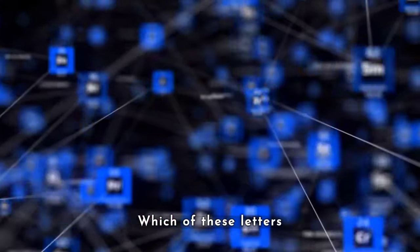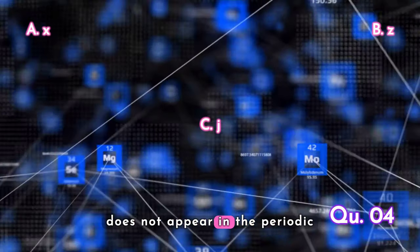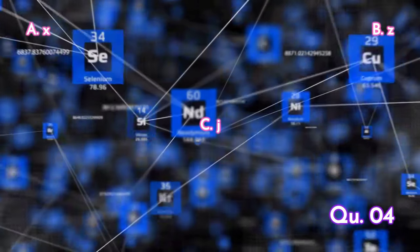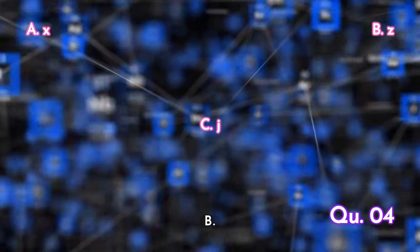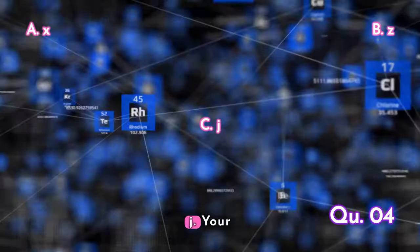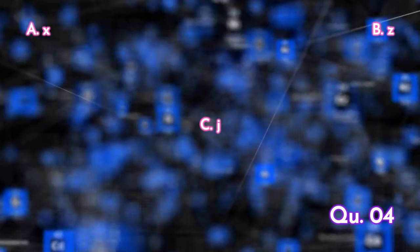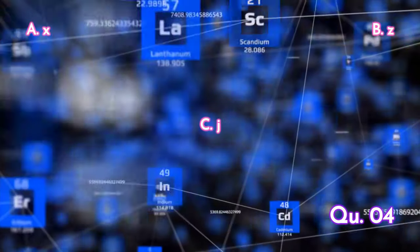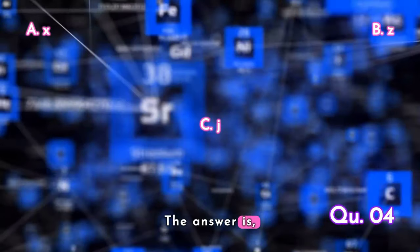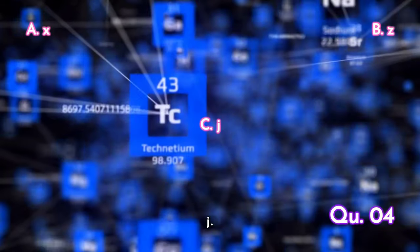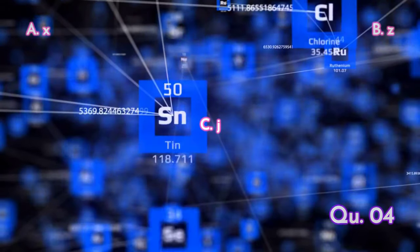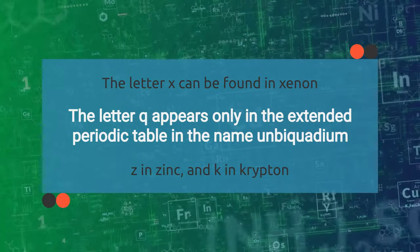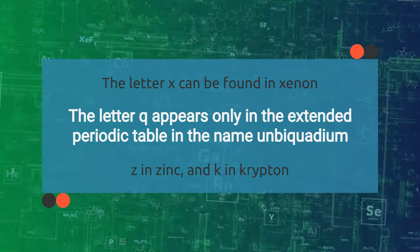Question 4. Which of these letters does not appear in the periodic table, either as a symbol or in an element name? A, X. B, Z. C, J. Your time starts now. The answer is C, J — among other places, a placeholder term for the as yet undiscovered element that will have the atomic number one.